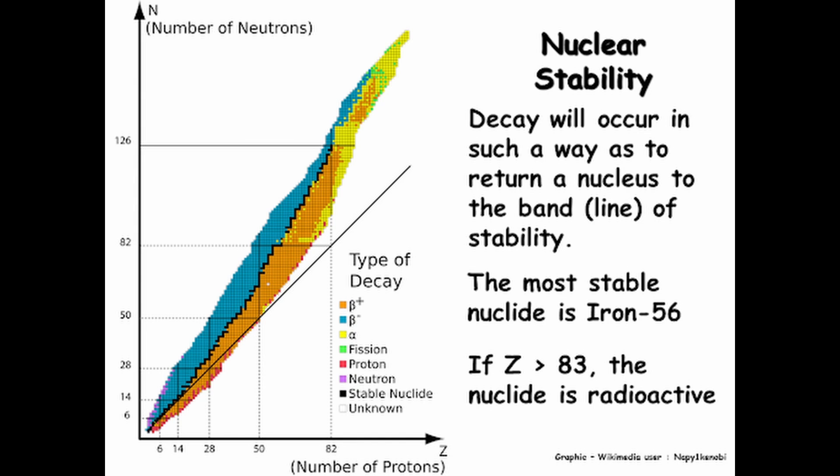Here is one of the most useful things that you can look at when looking at atoms. It's called the band of stability for neutrons. This is amazing.